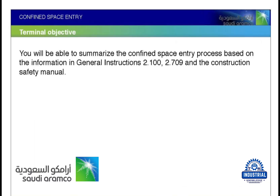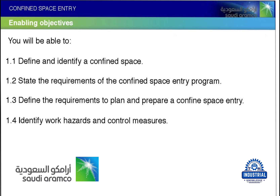You will be able to summarize the confined space entry process based on the information in General Instructions 2.100 and 2.709. In the construction safety manual, enabling objectives include: you will be able to define and identify confined spaces, state the requirements of the confined space entry program, find the requirements to plan and prepare a confined space entry.